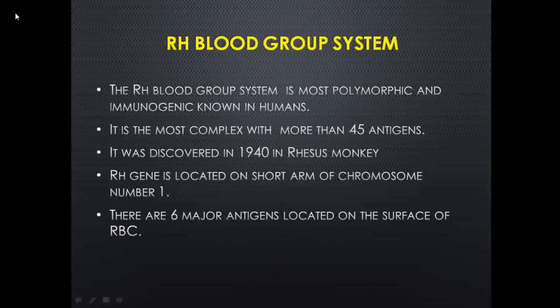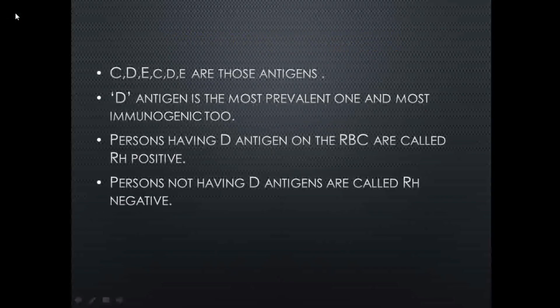Among those 45+ antigens, there are six major antigens located on the surface of our RBCs. The Rh antigens were discovered in Rhesus monkeys in 1940. The Rh gene is located on the short arm of chromosome number 1. The six major antigens on the RBC surface are: capital C, capital C, capital D, capital E, small c, small d, and small e.